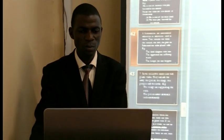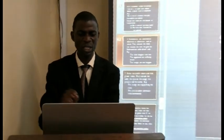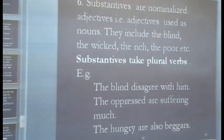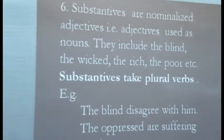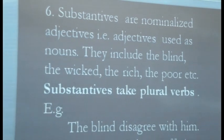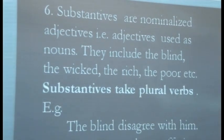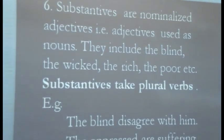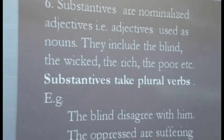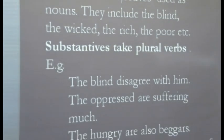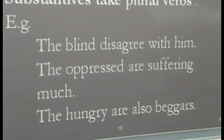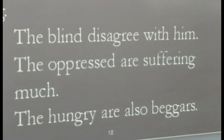Rule 6 — Substantives: Substantives are nominalized adjectives, that is, adjectives used as nouns. They include 'the blind', 'the wicked', 'the rich', 'the poor', etc. Substantives take plural verbs. For instance: 'The blind disagree within.' 'The oppressed are sovereign.' 'The hungry are also beggars.'